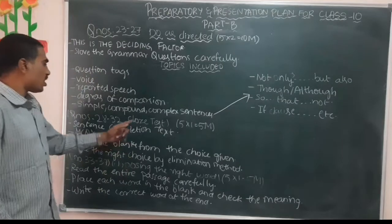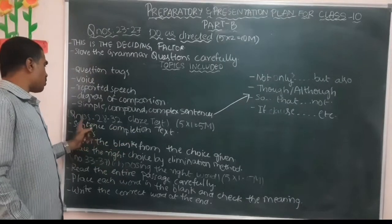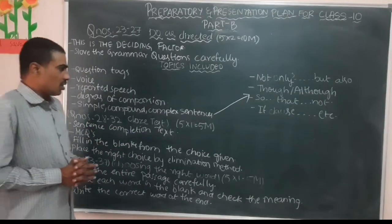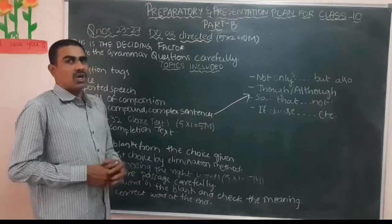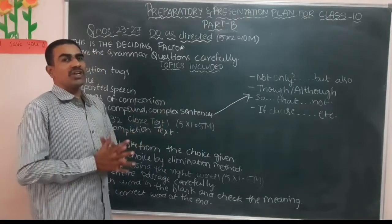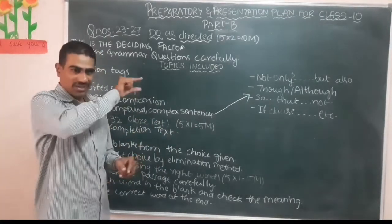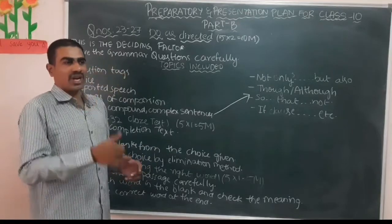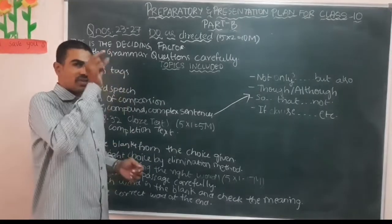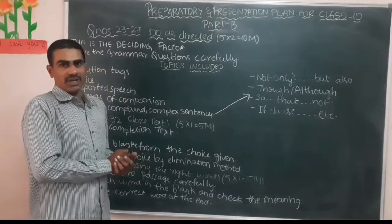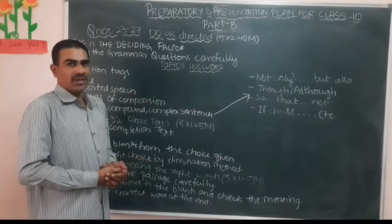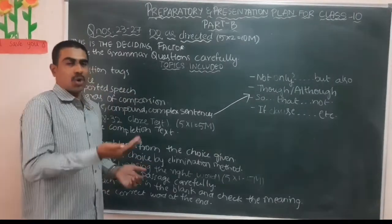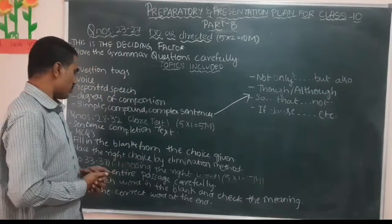The next section is the cloze test from question numbers 28 to 32, for five marks. The cloze test is multiple choice questions where one passage is given and certain words are removed from it. For the removed words, four multiple choice options are given, and you have to choose from them.